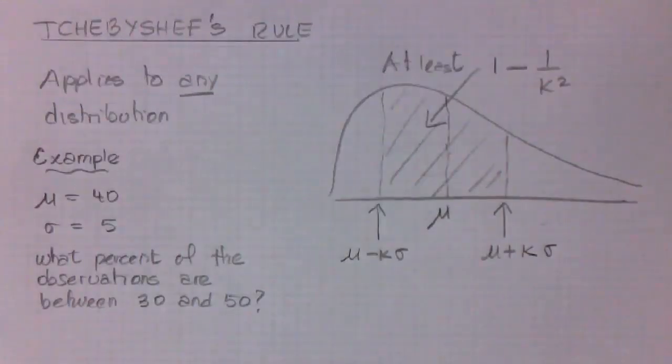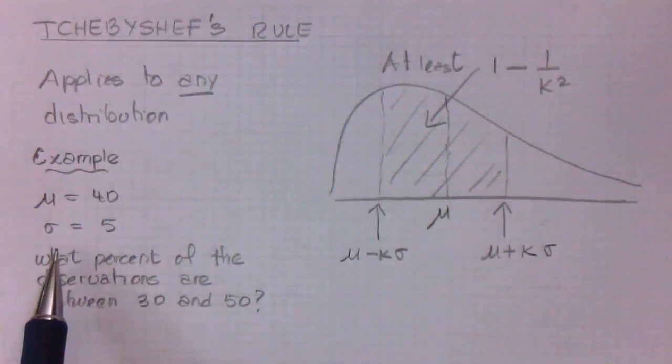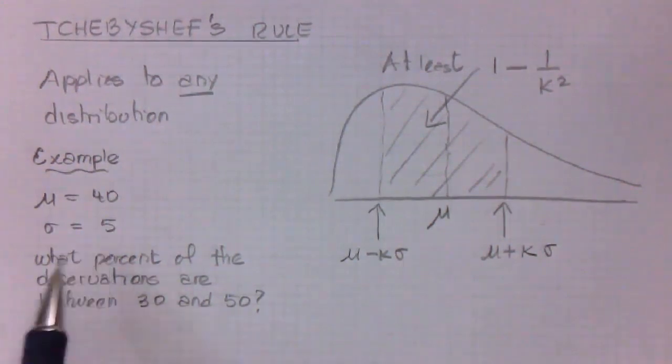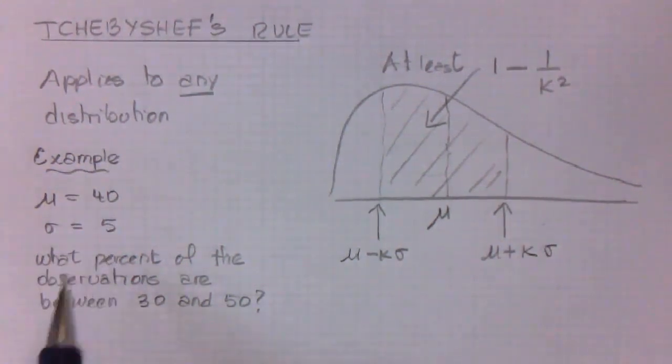For example, if we have a distribution where the mean is 40, the standard deviation is 5, but we don't know anything else about the distribution, we don't know if it is normal or not, what can we say about the percent of observations between 30 and 50?